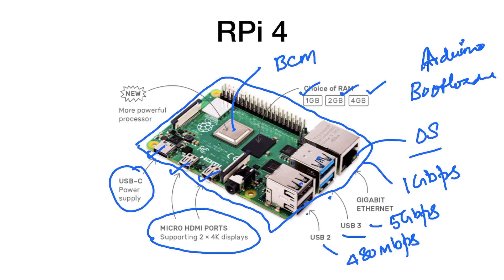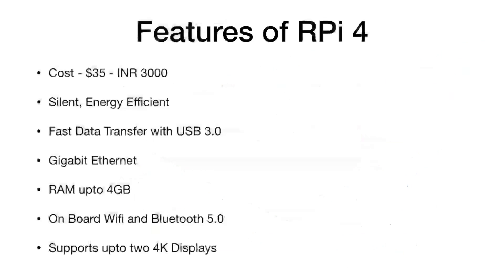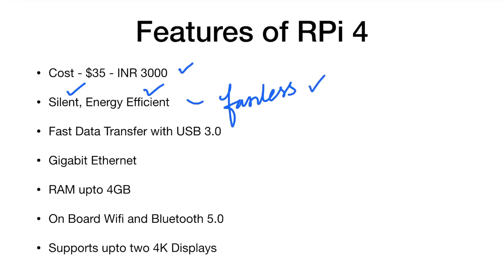The RPi 4 has these features. The basic cost of a Raspberry Pi 4 is around 3000 INR or 35 dollars for the 1 GB model; more RAM means a higher price. It is silent and energy efficient — it is a fanless board. Most desktops have a fan making noise, but this board does not need one, because the processor handles energy efficiently.